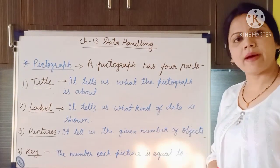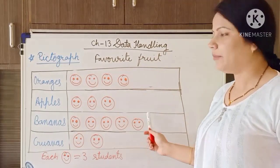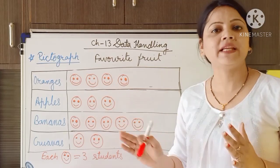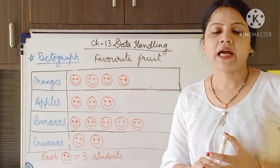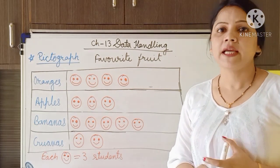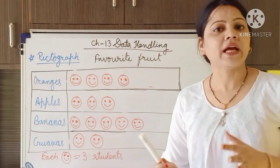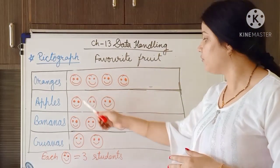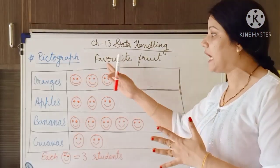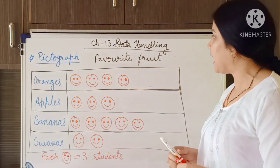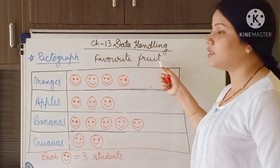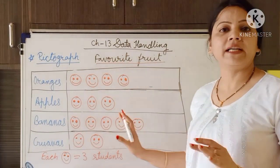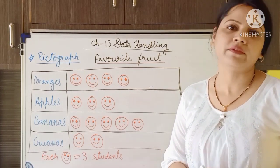Just pause this video and write these things in your maths notebook. Here I have made a Pictograph describing the favorite fruit of Class 3. I took a survey on Class 3 students, and according to the information I received about their favorite fruit, I have drawn a Pictograph. Now we will learn how to read the Pictograph. As you can see, I have written the title of this Pictograph: 'Favorite Fruit'. This means the Pictograph contains information about the favorite fruit of the students.